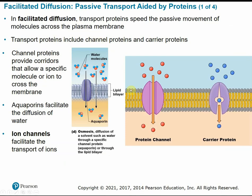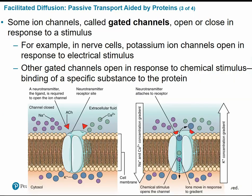Facilitated diffusion is facilitated or assisted by different transport proteins just to help speed up this passive transport of molecules across the membrane. We have protein channels — little tunnels or channels — or more specific carrier proteins that bind to specific molecules and shuttle them across the membrane. Channel proteins provide corridors to allow specific molecules or ions to cross the membrane, such as glucose or sodium. Aquaporins are specific protein channels for water molecules, facilitating transport through osmosis.